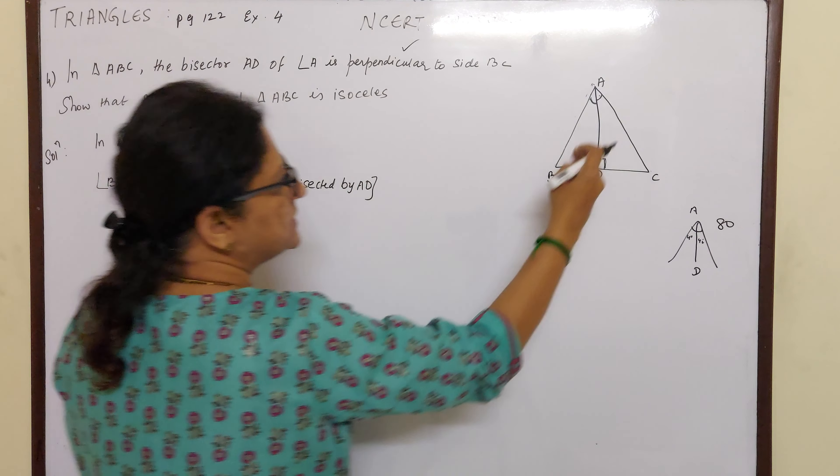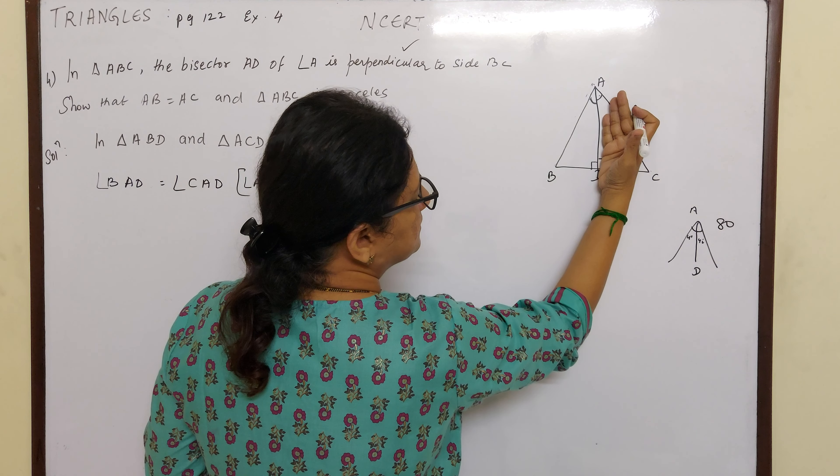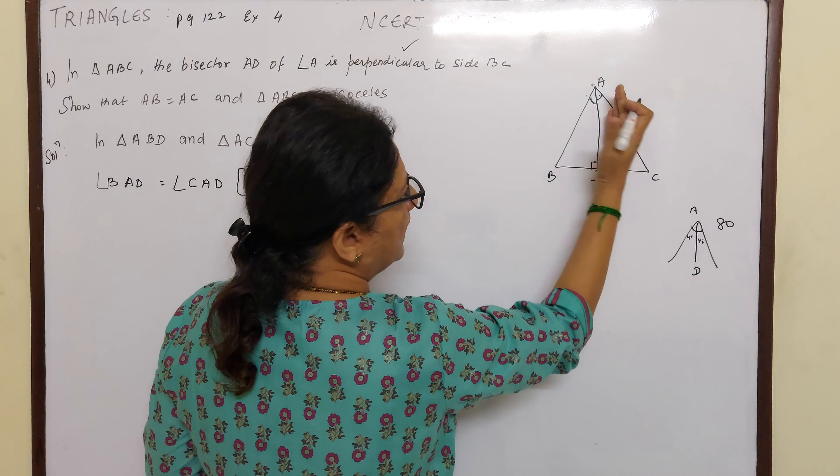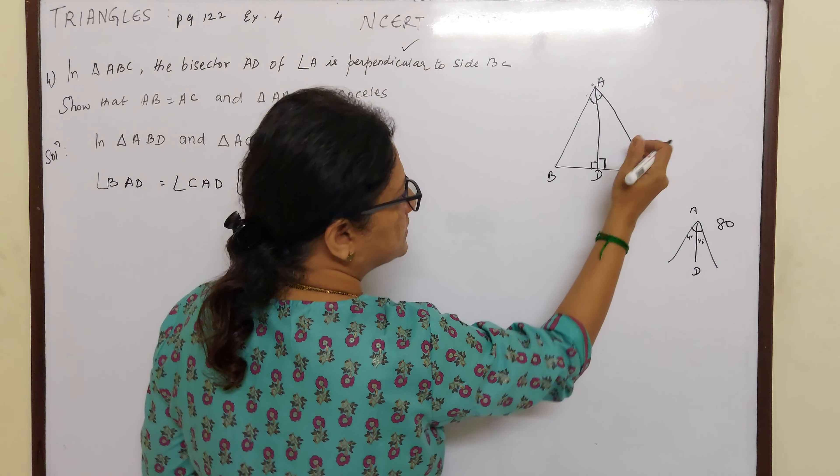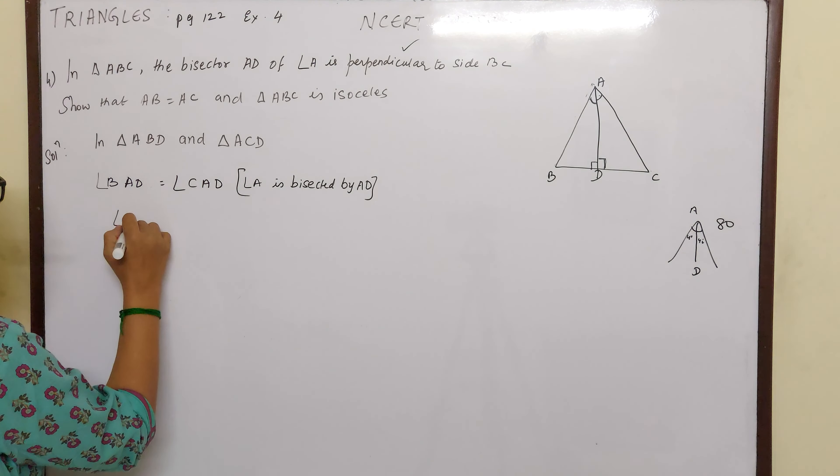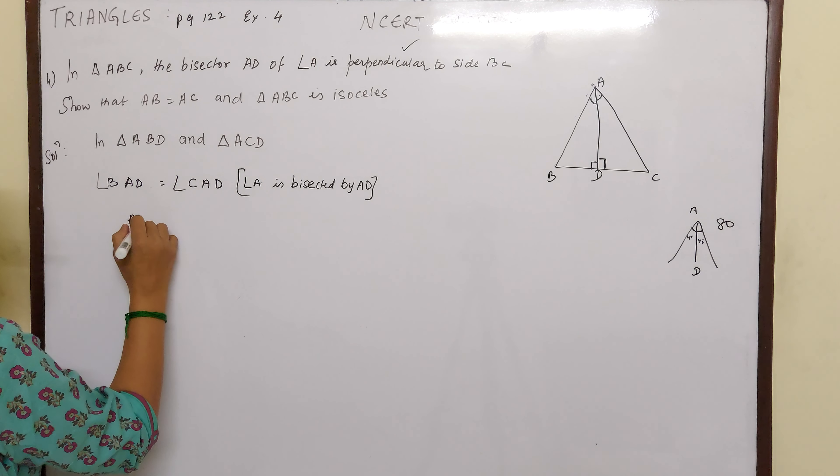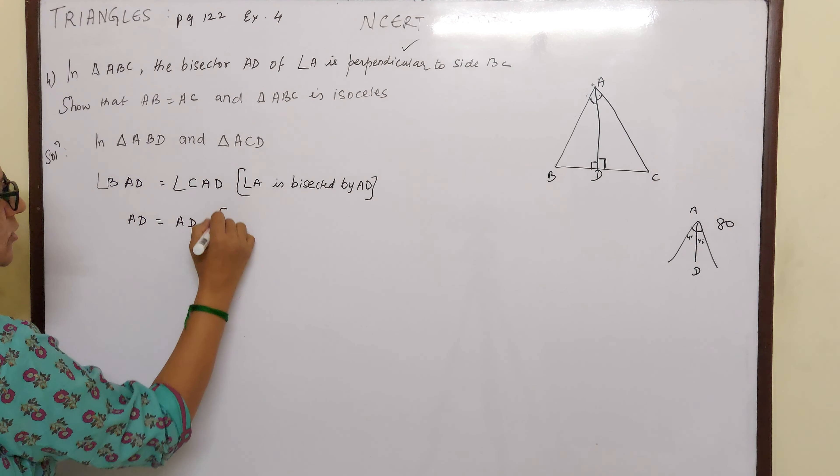Next, if you see this AD is coming, is the third side of triangle ABD, and here AD is common here also. It is forming one side for this also. So AD is common in both the sides. So I can say AD is equal to AD. The reason is common side.